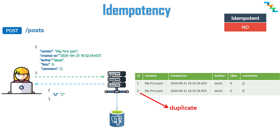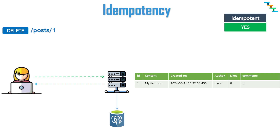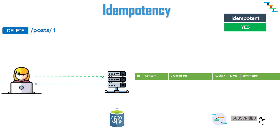We will see how to make a POST request idempotent later in this video. Next is the DELETE method, which is used to delete a resource from the server. DELETE requests are idempotent — sending the same DELETE request multiple times has the same effect as sending it once. It removes the resource from the server, and subsequent DELETE requests will return a 404 Not Found, which is fine considering the state of the server has not changed.